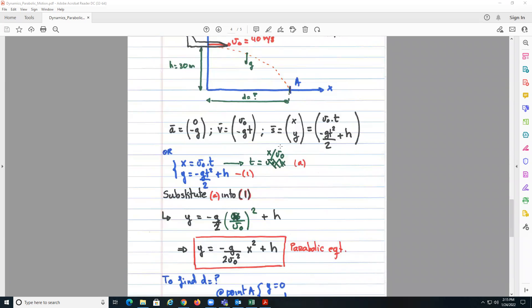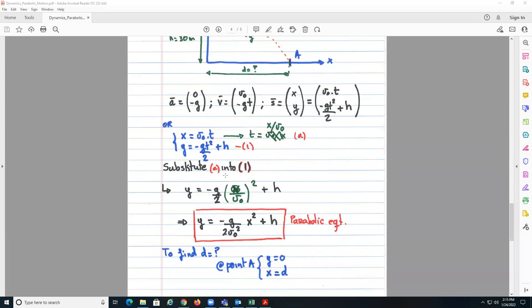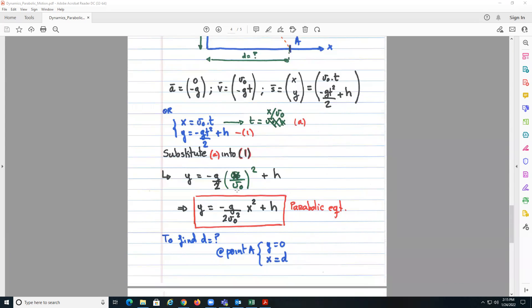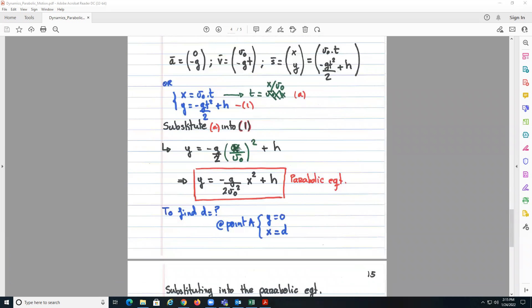First equation, second equation, we write x in function of t, so t equals x over v naught. You substitute into the second equation, so here should be x over v naught. And we get now this form of the parabolic equation.